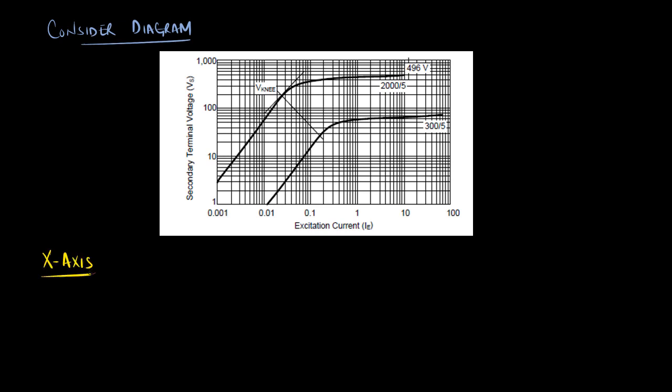On the x-axis, we have the excitation current IE, and on the y-axis, we have the secondary terminal voltage VS.